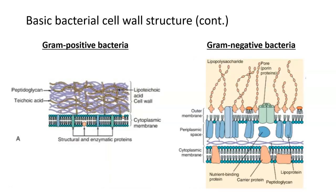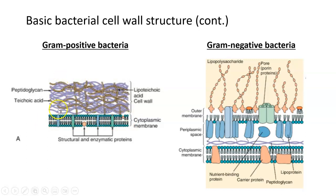If we looked at these as a cross section — just a slice of the cell walls of a gram positive and a gram negative species — it would look a little bit more complicated like these structures shown here. Here's the gram positive bacteria on the left. Those are the bacteria that have a single layer cell wall — that thick layer of peptidoglycan. Here's the plasma membrane in green and teal, and then outside you can see that thick purple layer — that's the peptidoglycan — a single layer outside of the cell membrane.